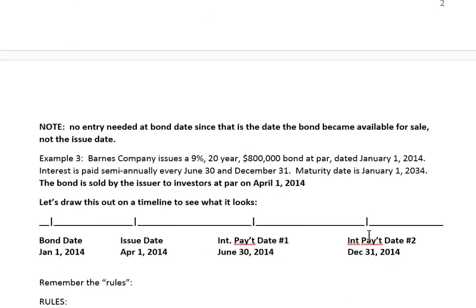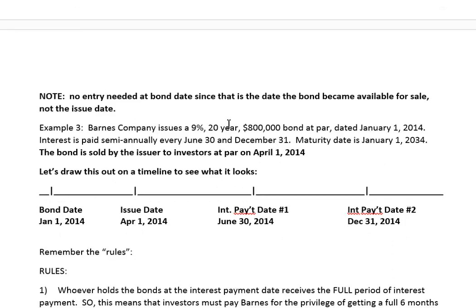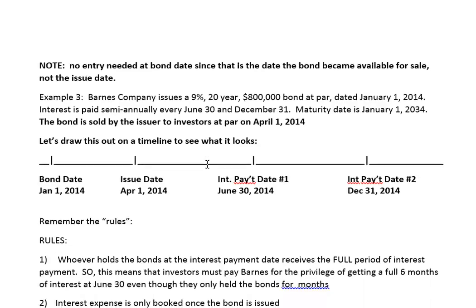Notice again that no entry is needed at the bond date — that's January 1st, 2014 — since that's the date the bond is available for sale, not the issue date. We don't need to make any journal entries before the issue date for the bond. We only have to make a journal entry at the issue date and for any subsequent interest expense that we need to book. So we've gone through a couple of examples, and we'll come back to finish our third example and then move on to a new topic.